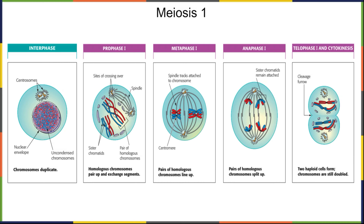The two cells at the end of meiosis one are not identical to each other — one has a red chromosome paired with another blue chromosome, and the other has the opposite. You can also see that some of those chromosomes have parts of different colors, and we'll go into why that is later.